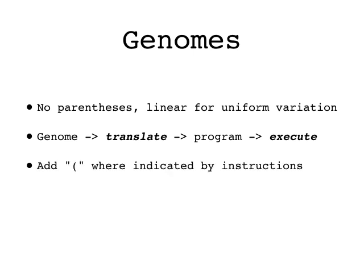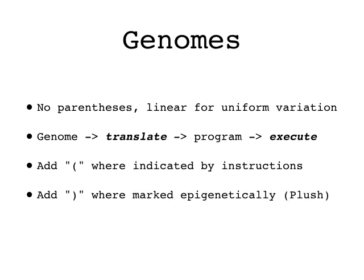The translation process adds opening parentheses where instructions that use code blocks indicate they should be. For example, execif takes two code blocks, so one is added after the execif, and then another after the first code block is closed. We've developed two ways to say where the closing parentheses go. One uses epigenetic markers attached to the genes in the genome, saying how many closing parentheses go in each place — we call this Plush, which is Push with an L added for linear. The other way is to allow close instructions in the genome, which turn into closing parentheses during translation — we call this Plushy. With either Plush or Plushy, unmatched closing parentheses are ignored and extras are added at the end if necessary to close everything up.